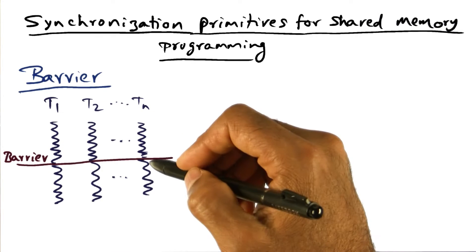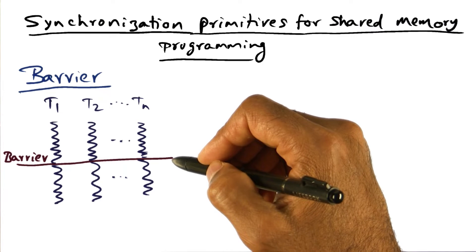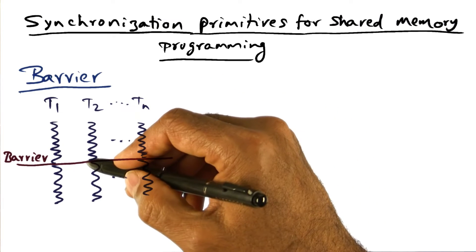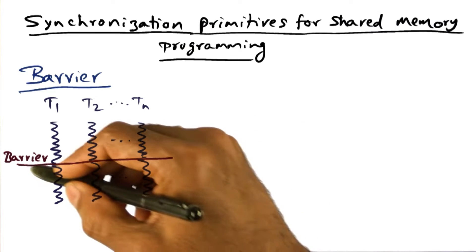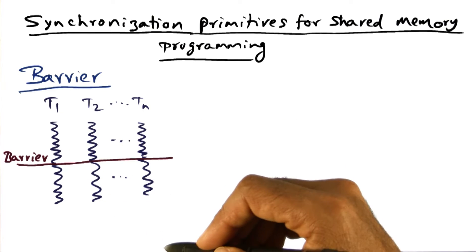They want that assurance that everybody has reached a particular point in their respective computations, so that they can all go forward from this barrier to the next phase of the computation.